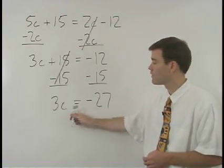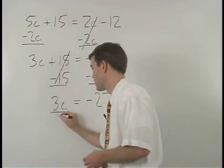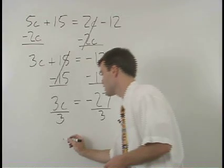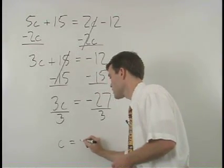To get c by itself just divide both sides by 3 and c equals negative 9.